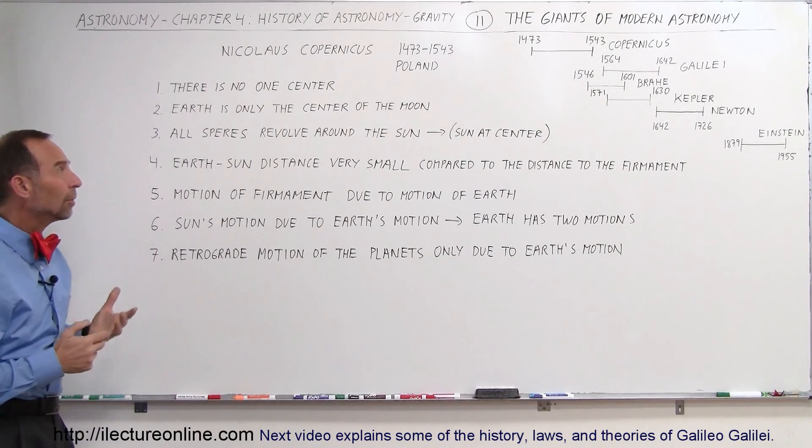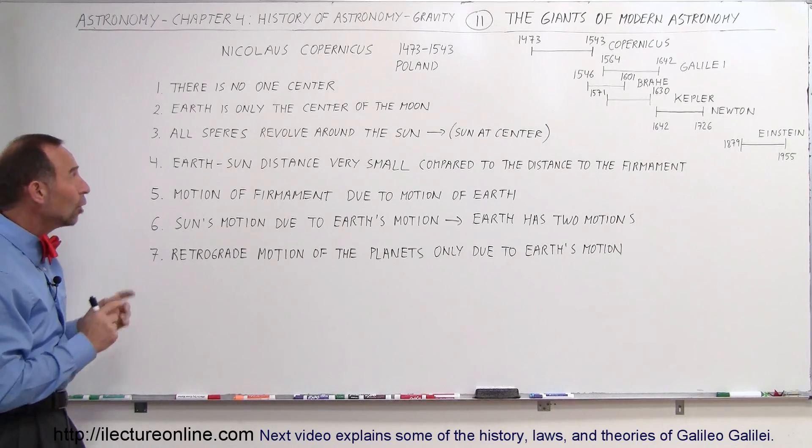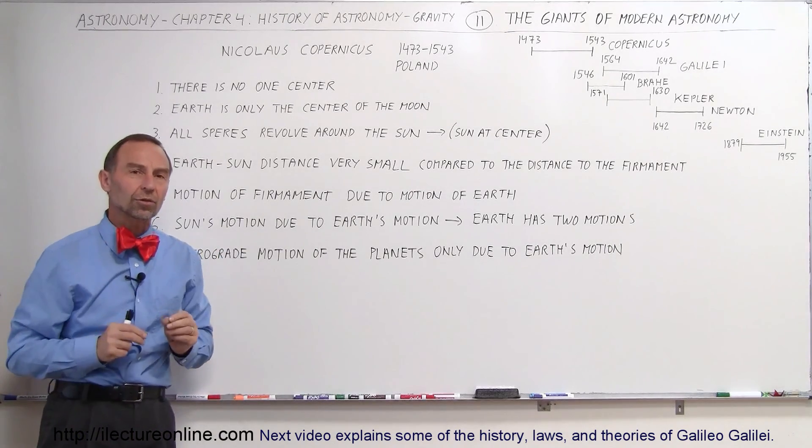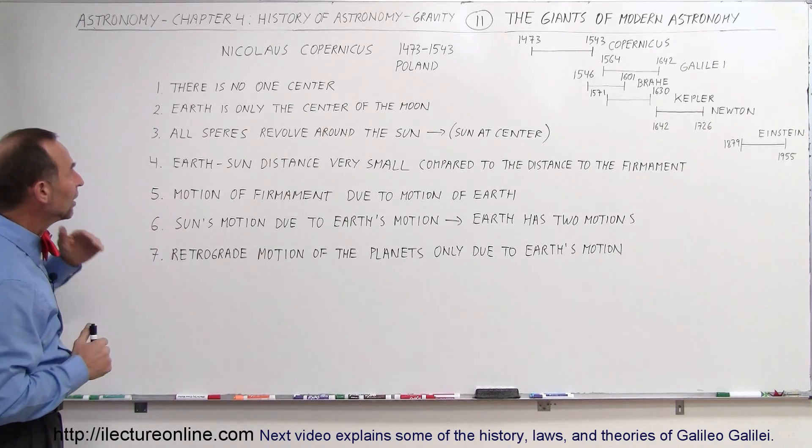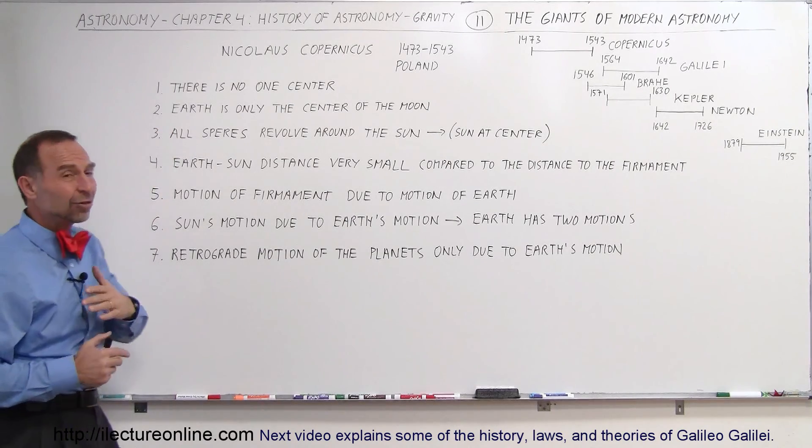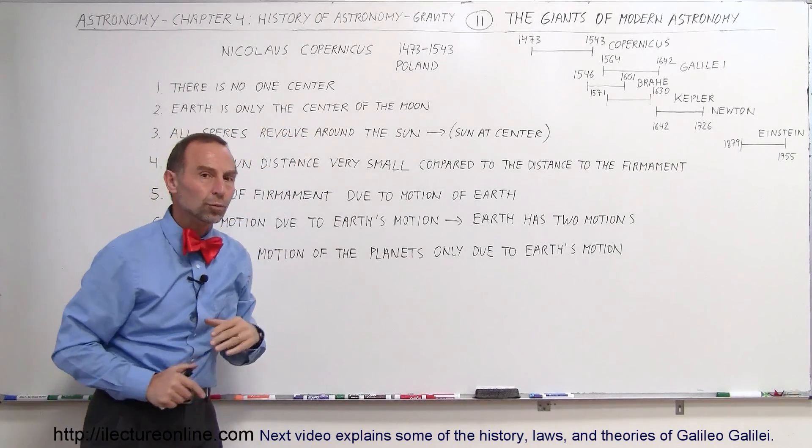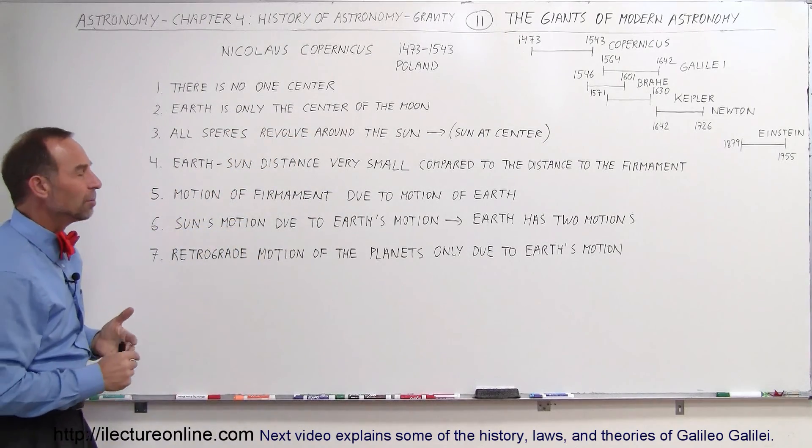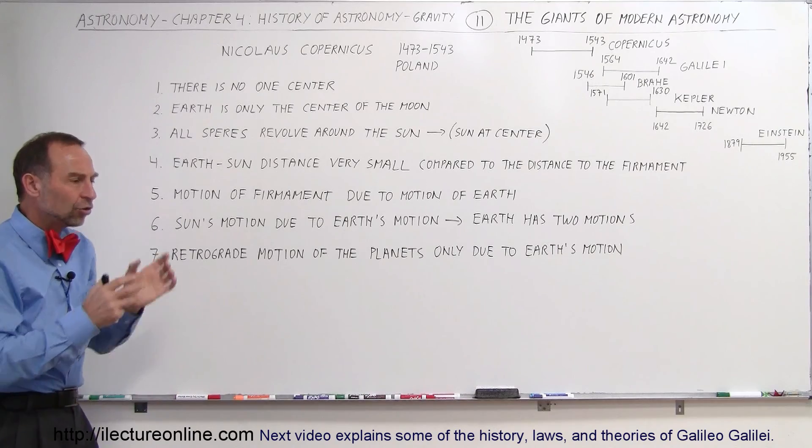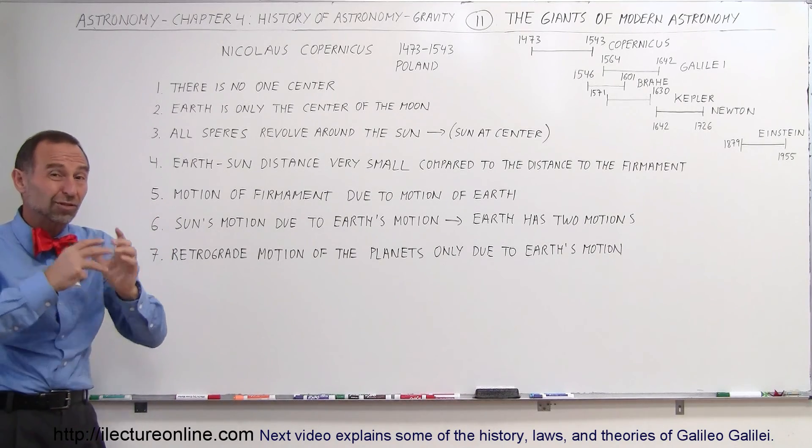Now, here he came along, Copernicus came along, and he said, no, there's no one center. There's multiple centers. And he said that the Earth is not the center of everything. The Earth is only at the center of the moon. Wow, that was a tremendous statement. So that means there's just not one center of the universe. There's more than one center.